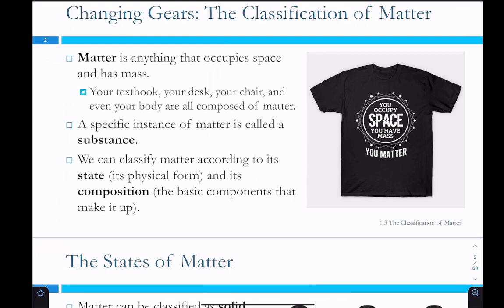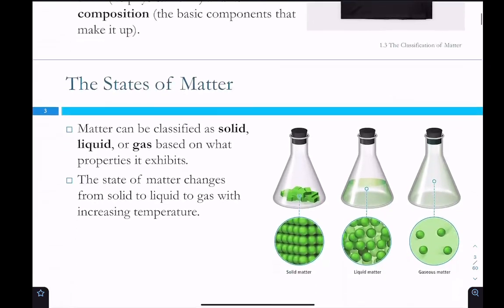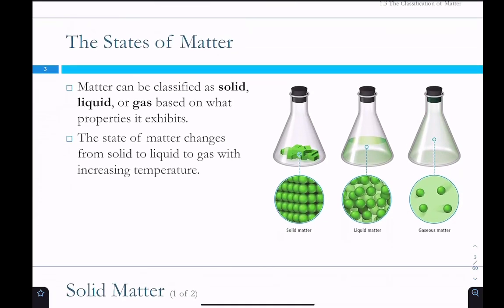We can classify matter according to its state, which is its physical form, or its composition — the basic components that make it up. So solid, liquid, gas, and then what are all of the things inside of that solid, liquid, or gas? We're going to start with the states of matter, and we're going to very quickly tunnel in on more and more specific states of matter, because supergeneral states of matter are only slightly useful. The more specific you get, the more useful the classification gets. So we classify things as solids, liquids, or gases.